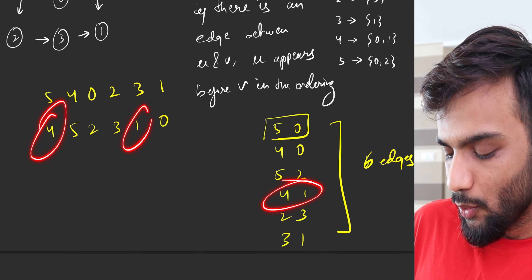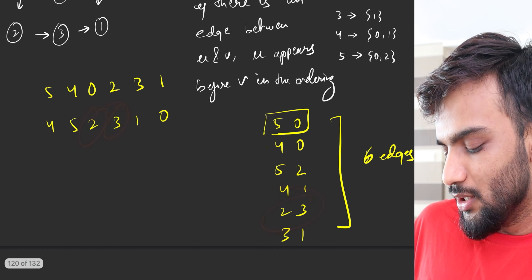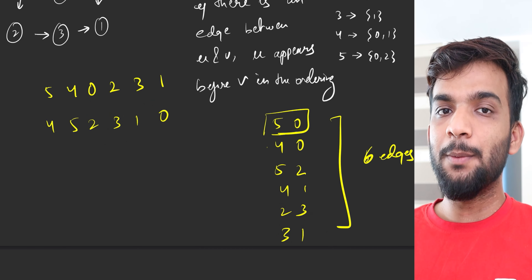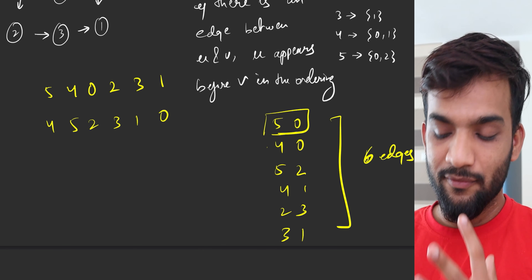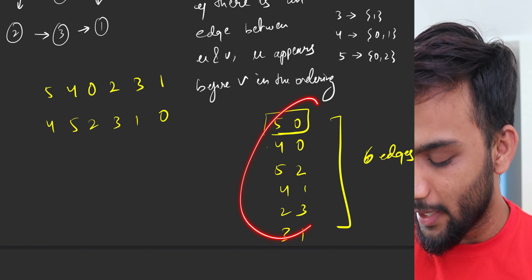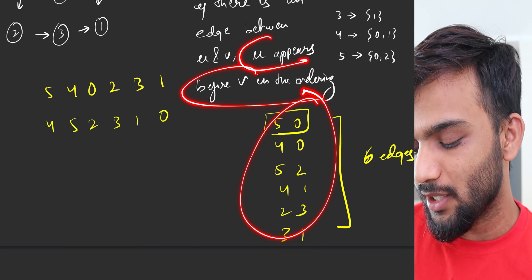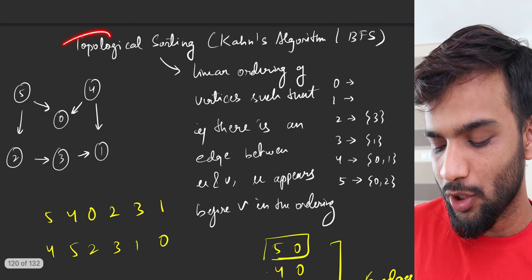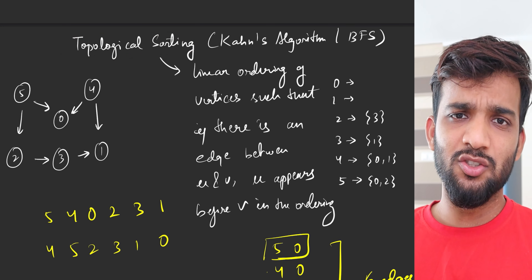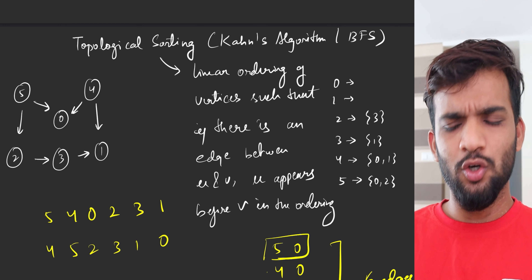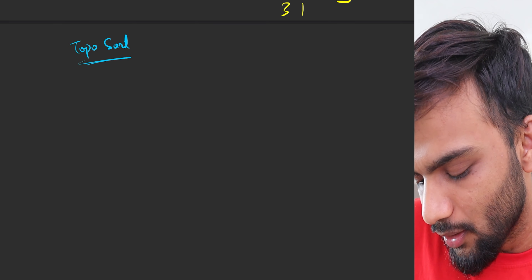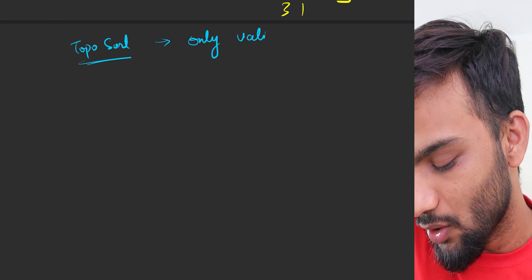There can be multiple valid linear orderings of vertices, as long as all the edges satisfy this condition. Any such ordering can be called a topological sort, and our task is to print any one valid topological sort.